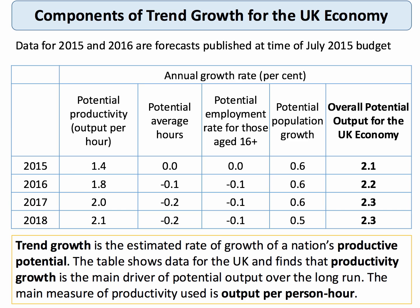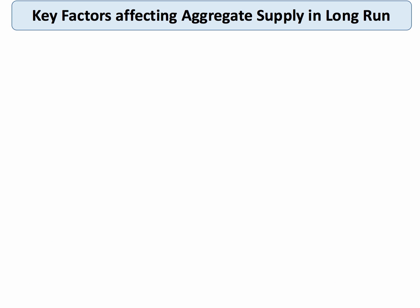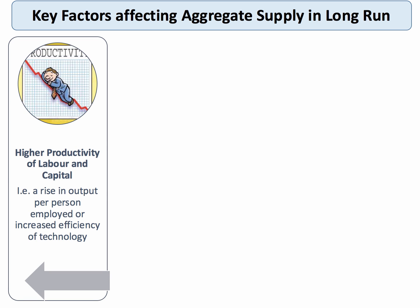The UK economy tends to grow in the long run by about two to two and a half percent per year. The most important factor affecting long-run aggregate supply is productivity — output per person employed or output per work hour. There are various ways of measuring this, but if we can lift the efficiency of our factor inputs — both labour and capital — we can drive an increase in productive potential.